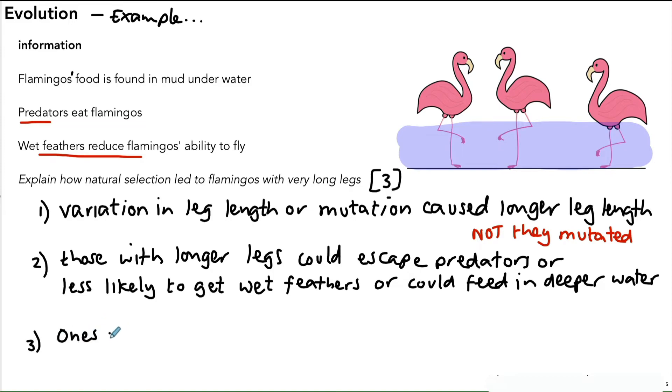Now for the third point, this is the one that people most commonly get correct, so it should be fairly straightforward. We could say here that the ones with the longer legs were more likely to survive, and if they're more likely to survive they're more likely to breed and pass on their genes to the offspring. So ones with longer legs more likely to survive and breed and pass on the genes.